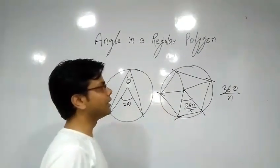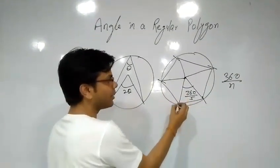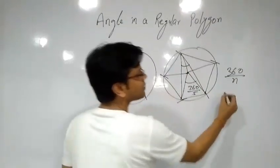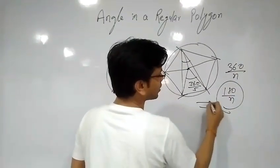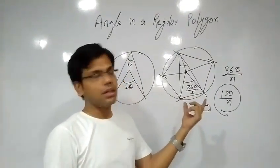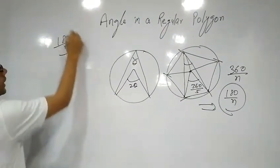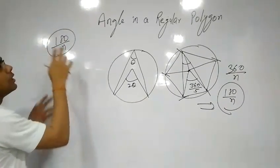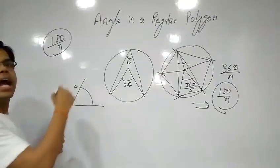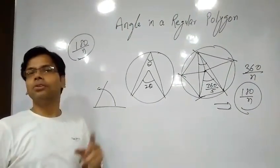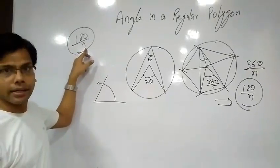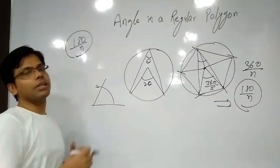I hope that is clear. For an n-sided figure, if the center angle is 360 upon n, then the angle at the perimeter by the same vertices is half of this — that is 180 by n. So 180 by n is the perimeter angle formed by two consecutive vertices. And the last concept is that we measure angles in the anticlockwise direction. So we just need to know: angle by two vertices of a regular polygon on the perimeter is 180 by n, and angle measurement is always anticlockwise.